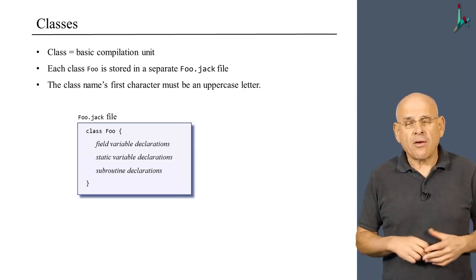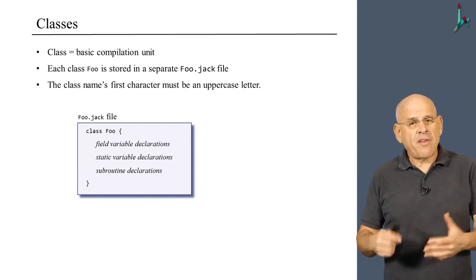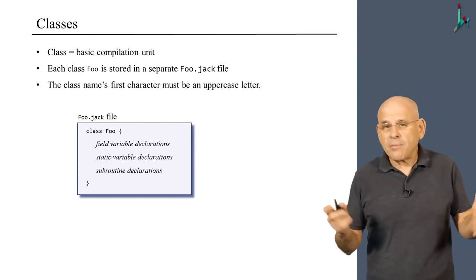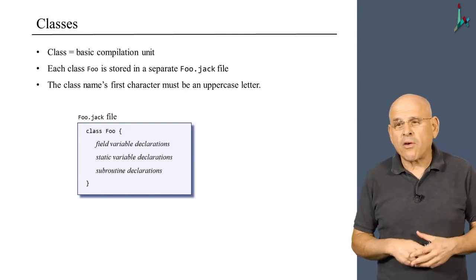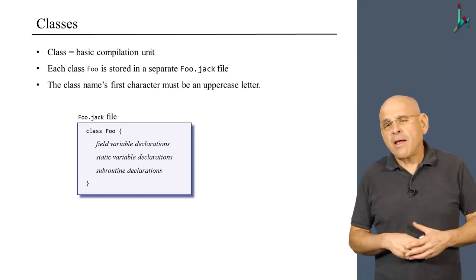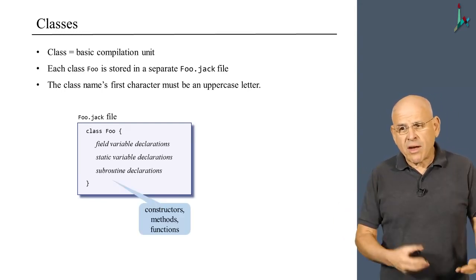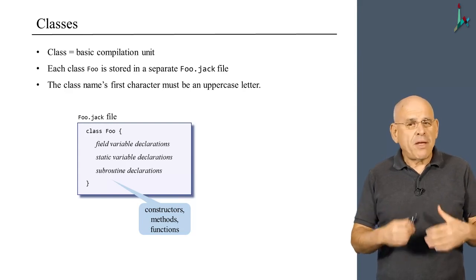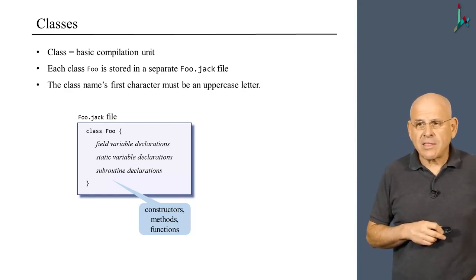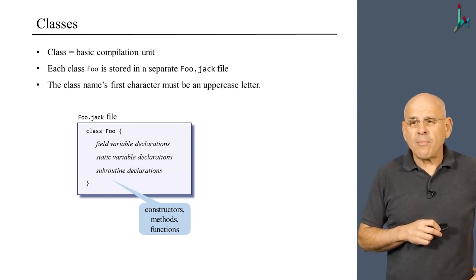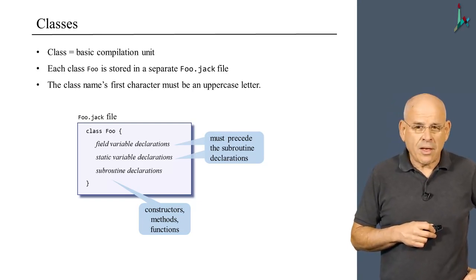Here is the general skeleton of a class in Jack. It begins with a class name, and then we have field variable declarations, which are optional. Then we have another set of zero or more static variable declarations. And finally, we'll have what I call the subroutine declarations. By subroutine, I refer to constructors, methods, and functions. They should appear at the end of the class declaration and typically capture the bulk of the class contents. We have this syntactic requirement that field and static variables, if they exist in the class, must appear before the subroutine declarations.